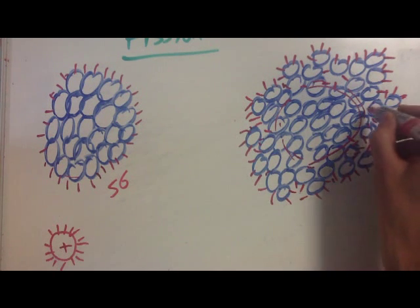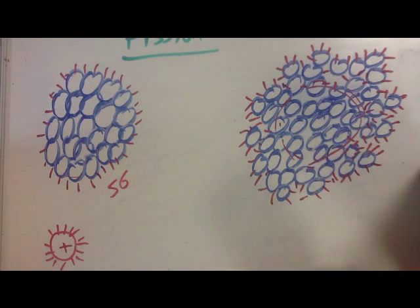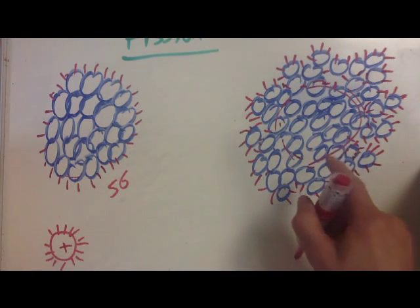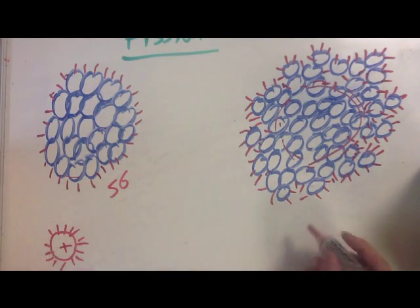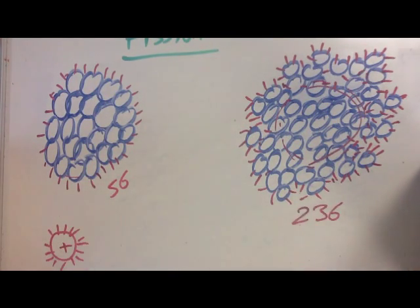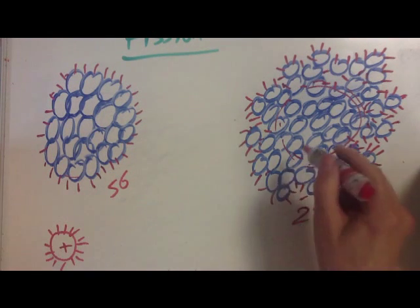The amount of energy required to hold this together starts to increase. Now we find the average binding energy here is much greater than here. This has got a mass of 236.